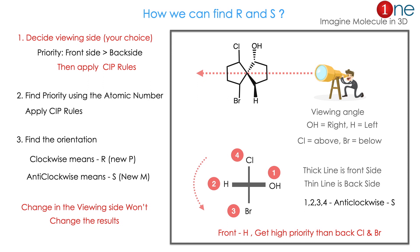So you have to write it like a tetrahedral carbon. The central one is our chiral axis. So OH and H are front side, you have to give higher priority within. Chlorine and bromine are backside, you have to give least priority within.